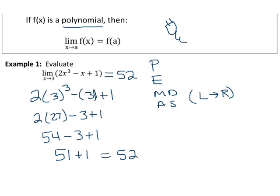And we would read this as the limit as x approaches 3 of 2x cubed minus x plus 1 equals 52. So remember, we used the theorem that's stated up there at the top. And this only works for polynomial functions.